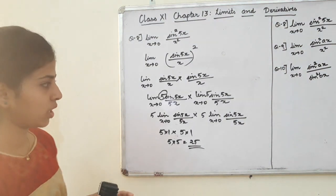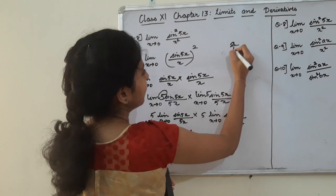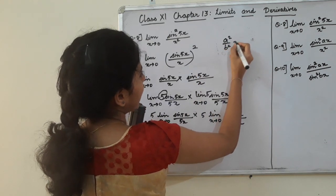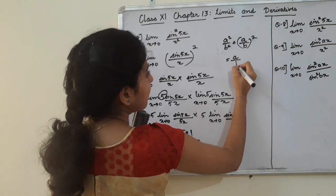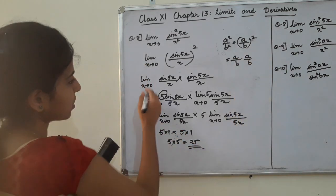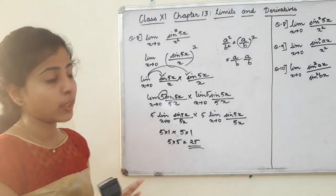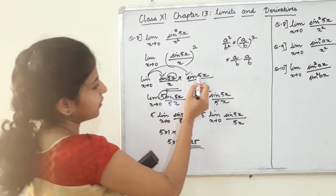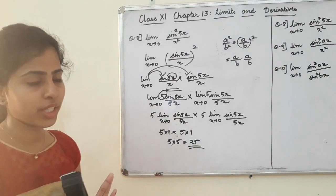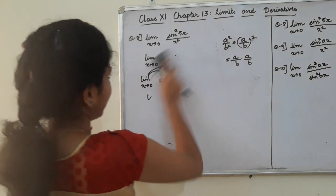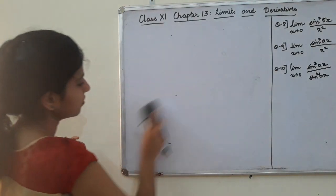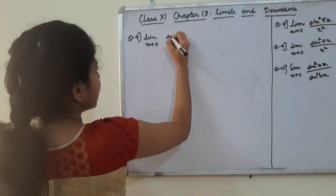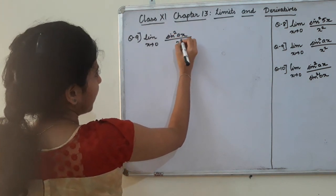Now we will solve it. What we have to do is a by b whole squared. We have a squared by b squared, that's why we have a by b whole squared, that's why we have a by b into a by b. That's why we have a limit to separate it. We will solve it — limit is separate. Question number 9.